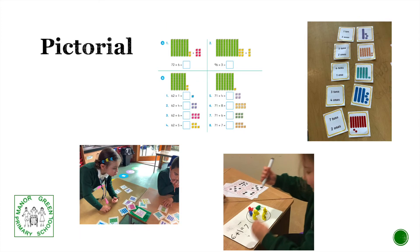Pictorial is the seeing stage. Here, visual representations of concrete objects are used to model problems. This stage encourages children to make a mental connection between the physical object they just handled and the abstract pictures, diagrams or models that represent the objects from the problem. Building or drawing a model makes it easier for children to grasp difficult abstract concepts. Simply put, it helps students to visualise abstract problems and make them more accessible.